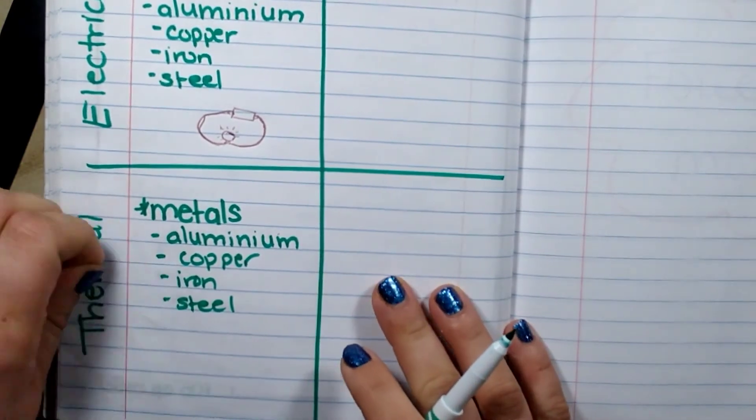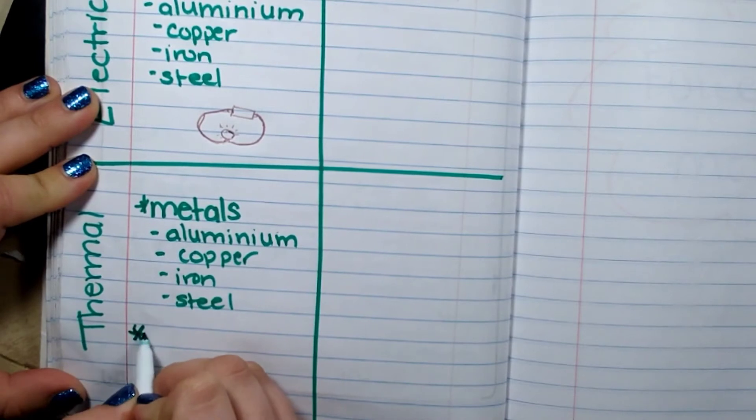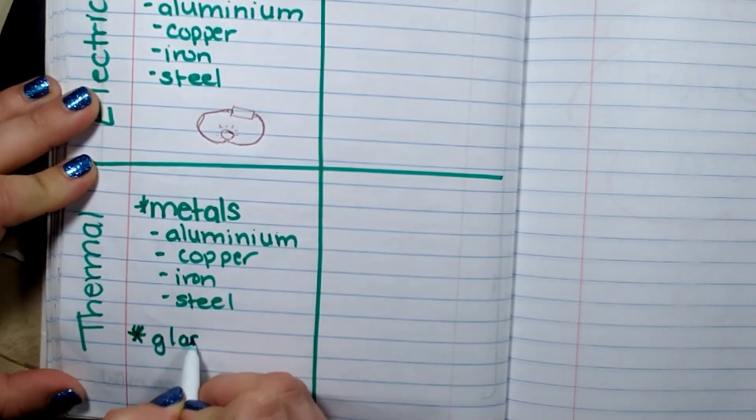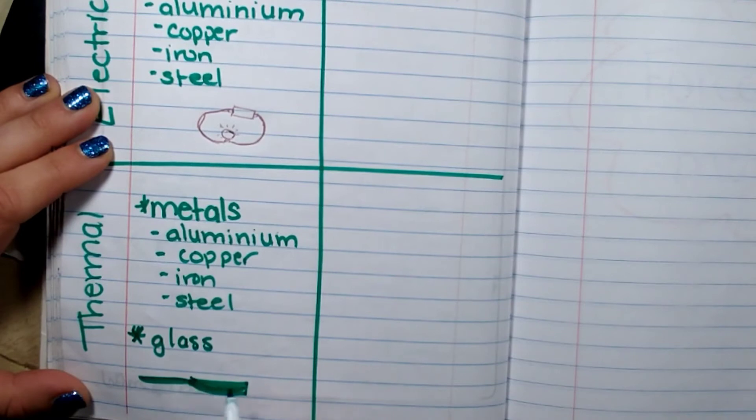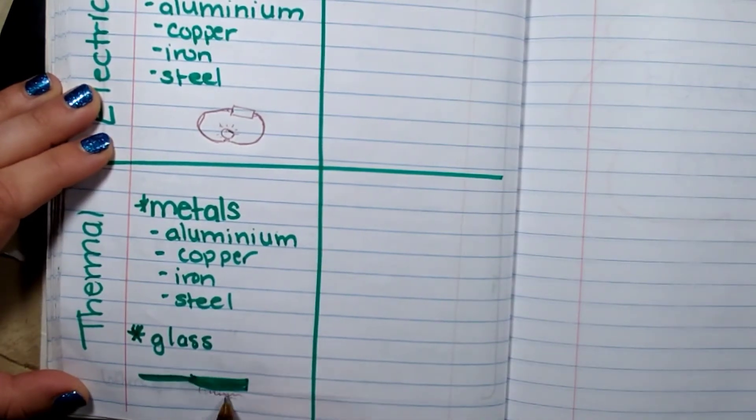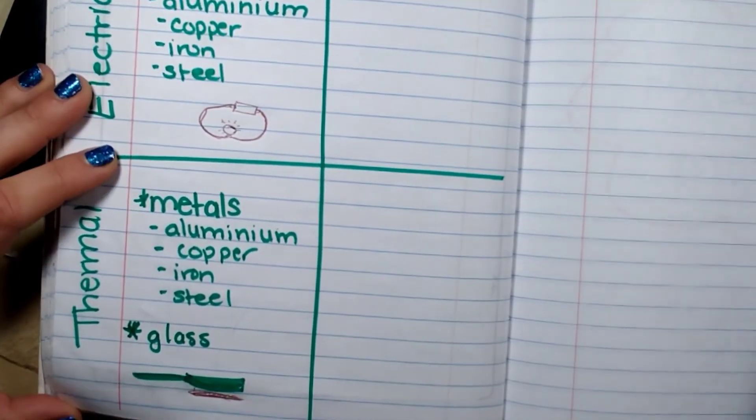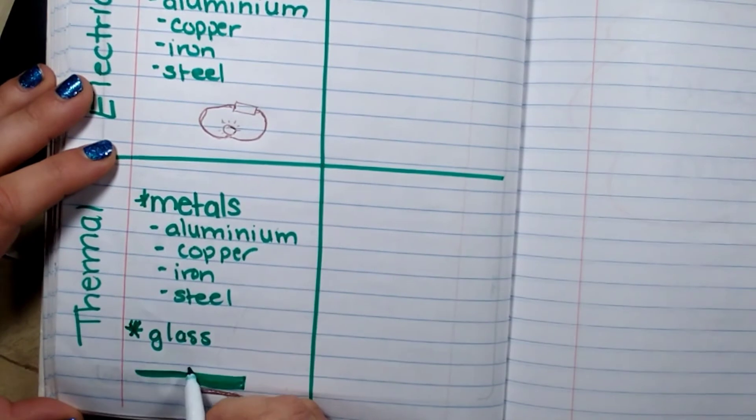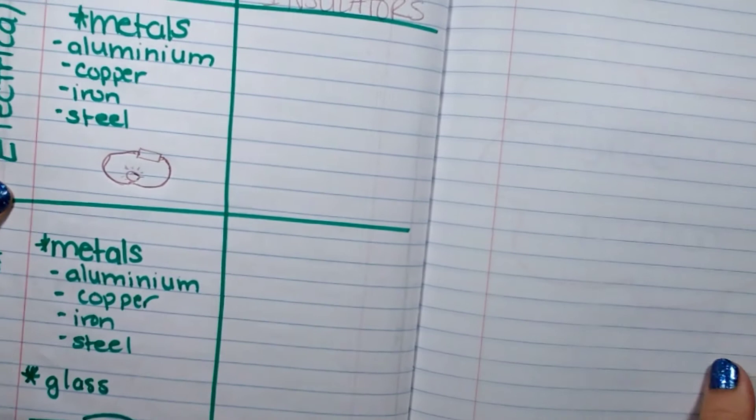Alright, other things that are conductors when we're using thermal energy is glass. So if we think about pots, what pots are made out of. I'm going to do my little burner down there. And that is my - that's supposed to be a pot. I'm not a very good artist here.